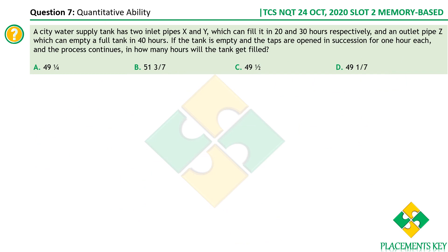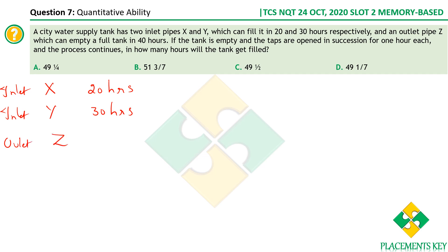A water tank has two inlet pipes X and Y that can fill in 20 hours and 30 hours respectively, and one outlet pipe Z that empties in 40 hours. Assume total capacity = LCM(20, 30, 40) = 120 liters. This method avoids fractions.